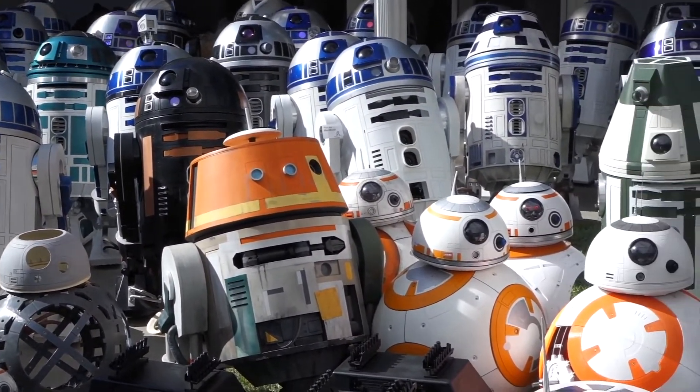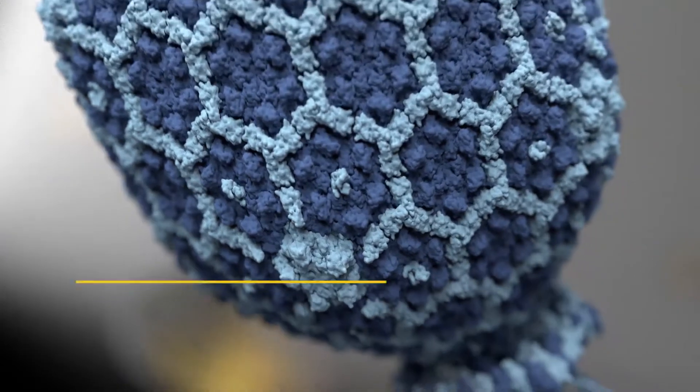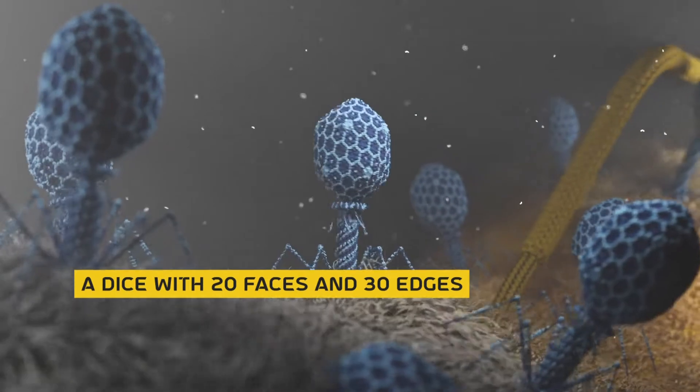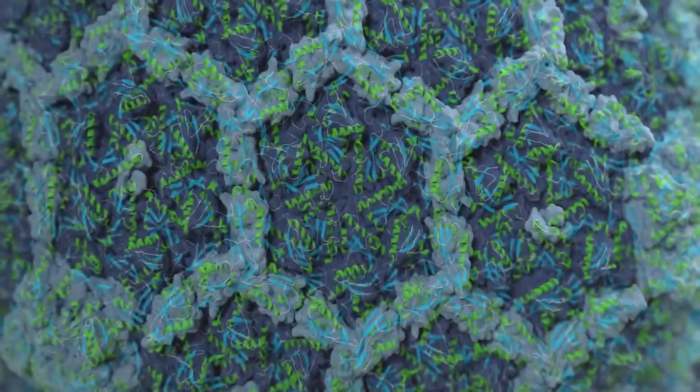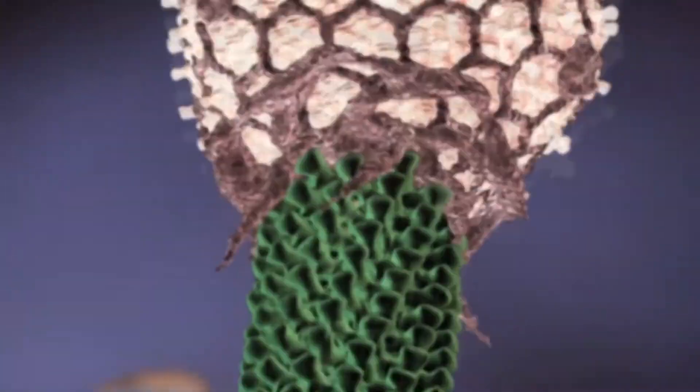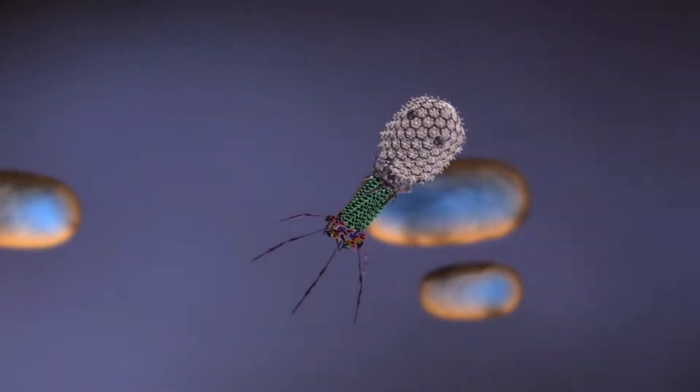A strange science fiction monstrosity, bacteriophage has an icosahedron head. Essentially, their head is a dice with 20 faces and 30 edges. Within that head, it contains the genetic material of the virus. Along with its head, it has a tail with leg-like fibers.